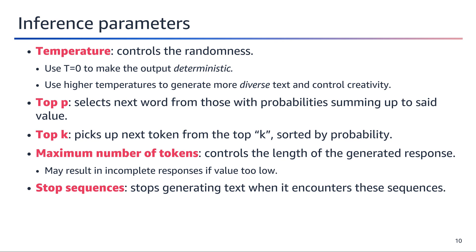Top P and Top K are techniques for sampling the next token during text generation. Top P selects the next word from the set of words whose cumulative probabilities sum up to the specified P value. Top K simply picks the next token from the Top K most probable options. The maximum number of tokens parameter sets a limit on the length of the generated response — if set too low, the model may produce incomplete or truncated responses. Stop sequences are specific sequences of text that instruct the model to stop generating output when encountered, allowing control over when the response ends.